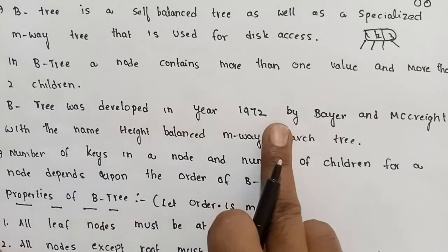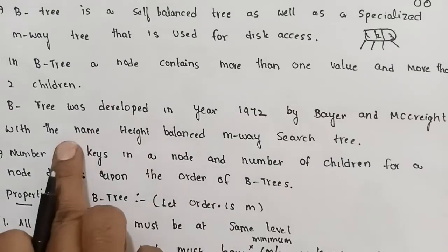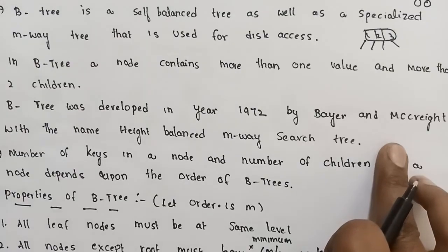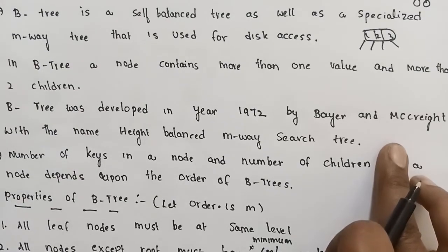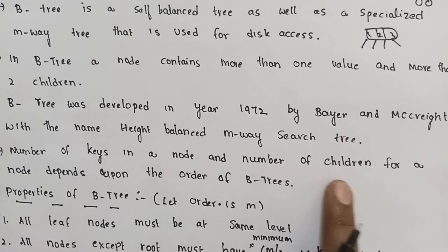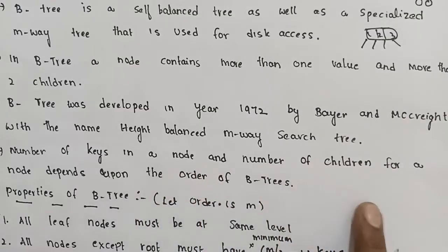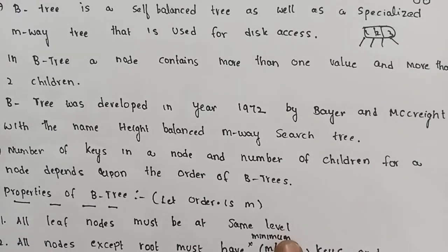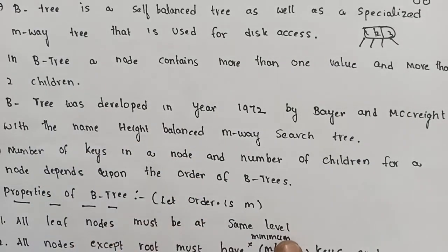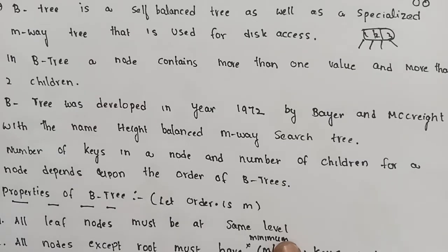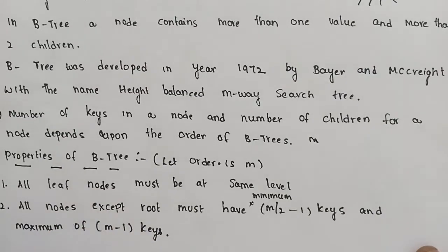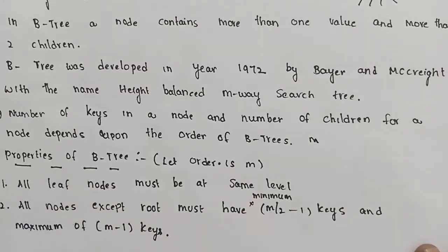B-tree was developed in 1972 by Bayer and McWright. The original name was height-balanced M-way tree. The number of keys in a node and the number of children for a node depends on the order of a B-tree. We will discuss the properties based on the order of a B-tree.